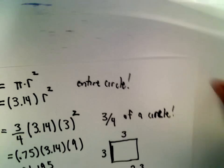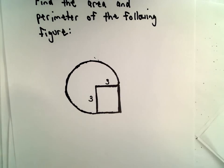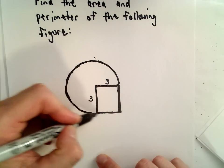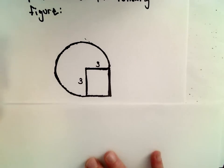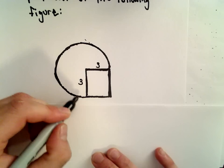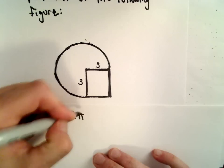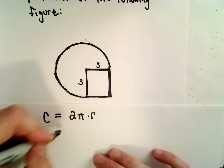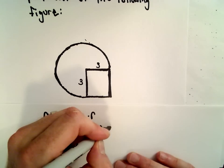Now the next thing we're going to do is figure out the perimeter — that means we want to find the distance around the outer edge. To figure out the perimeter, we're going to start off by using the circumference formula for the circle. Recall that the circumference, or the distance around a circle, is 2 pi times the radius. We're going to approximate pi by using 3.14, and the radius is equal to 3.